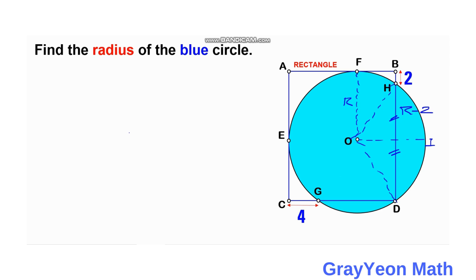And if that is R minus 2, then this is a perpendicular bisector at O, then this should be R minus 2 also.